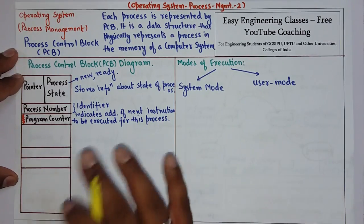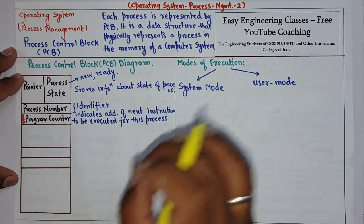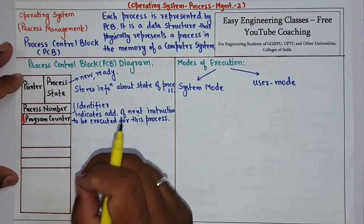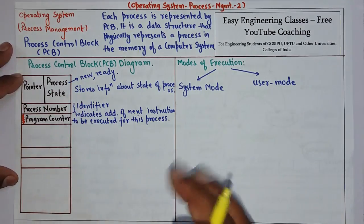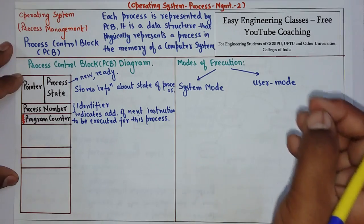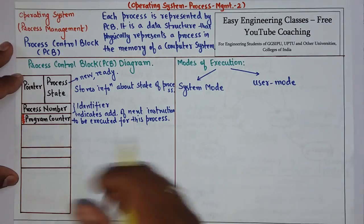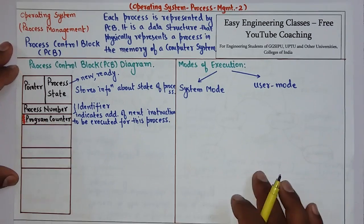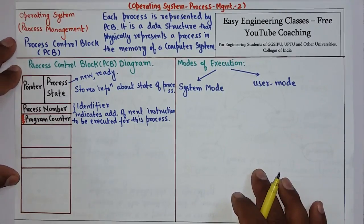The program counter is important because whenever a process resumes, it needs to be identified which is the next instruction that needs to be executed. That information is stored in the program counter field.